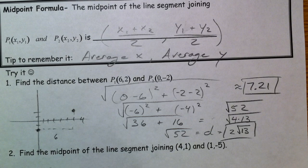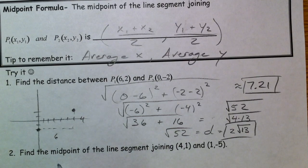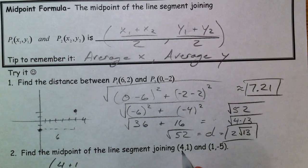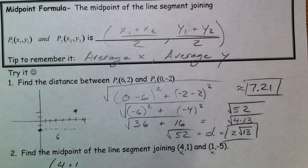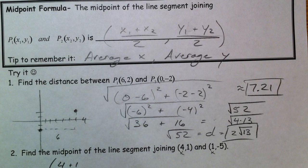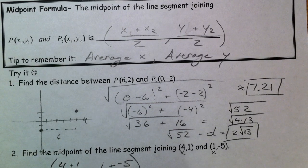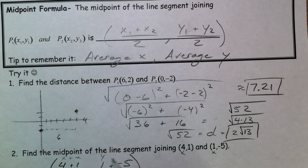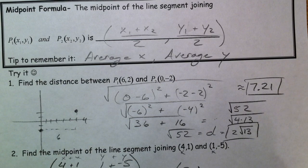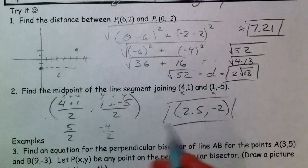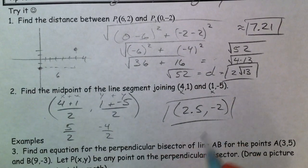Find the midpoint of the line segment. Average of the x's, average of the y's. So 4 plus 1 divided by 2, that's 5 divided by 2, 5 halves or 2.5, whichever way you want. And 1 plus -5 divided by 2 is the x plus the x and the y plus the y. So -4 divided by 2. Your final answer is (2.5, -2).